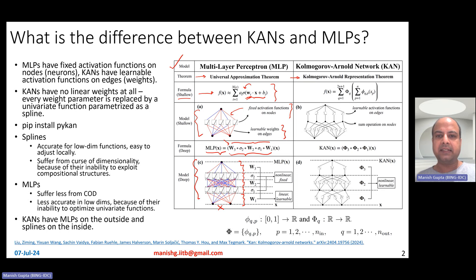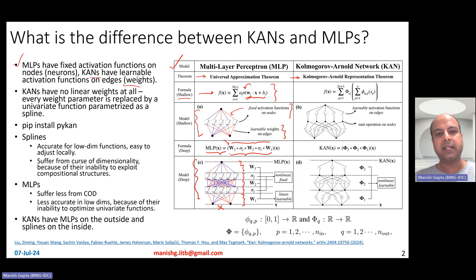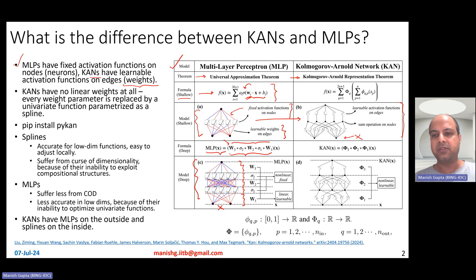Now let's look at what happens in KANs. While MLPs have fixed activation functions on the nodes, KANs actually have learnable activation functions — and that is what differentiates them. That's the first level of differentiation. Similar to a layer in MLPs, this is a layer in KANs. In KANs you start with the inputs, and you do some sort of sum, but there are no fixed weights w — in fact there are no learnable weights w.